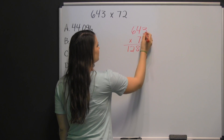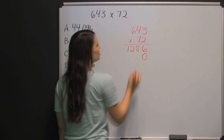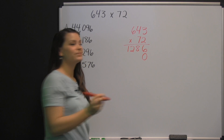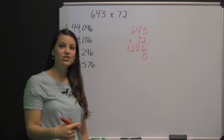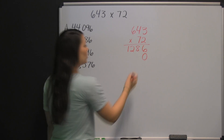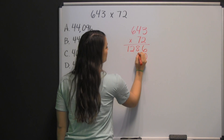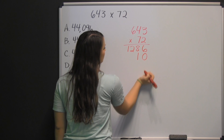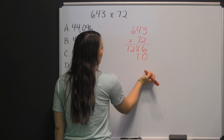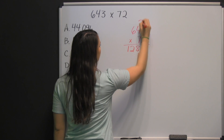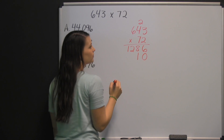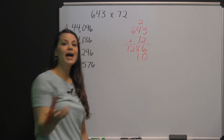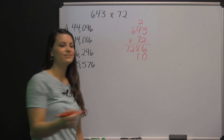Seven times three is 21. Since our product is a two-digit number, we write the digit in the ones place, and then we carry the two above the four, because we're going to add it to that.